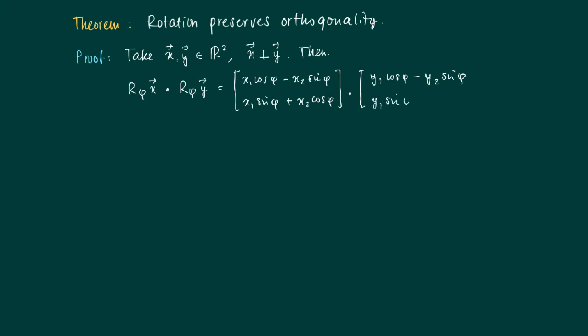We just multiply the vector y with the rotation matrix R_phi, which gives this expression. Now we form the inner product. We get (x1 cos phi - x2 sin phi) times (y1 cos phi - y2 sin phi).